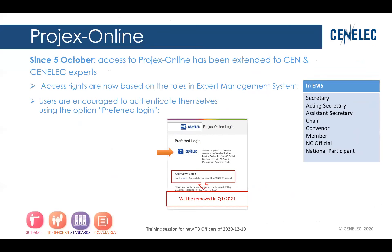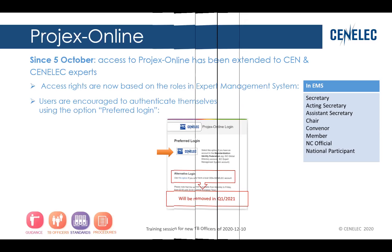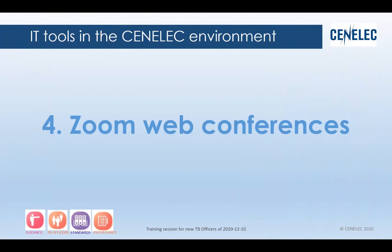A little information I would like to share: since the 5th of October, access to Projects Online has been extended to the CEN and CENELEC experts. Now the access to the tool is based on the role in the expert management system. We encourage users to log in by using the preferred login — so you can use your account from the expert management system instead of the one received from CCMC. You may still use that local CENELEC account via the option alternative login, but please bear in mind that this option will be removed in Q1 next year.